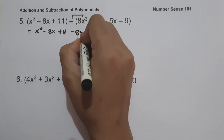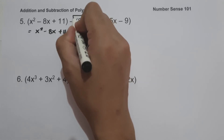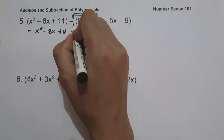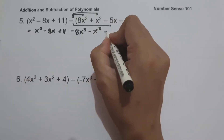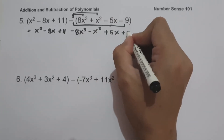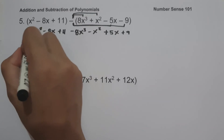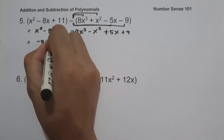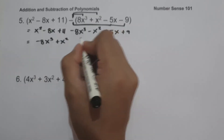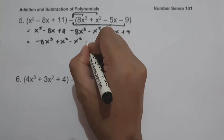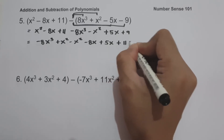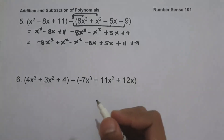Negative multiplied by x squared is negative x squared. Negative multiplied by negative 5x is positive 5x. And negative multiplied by negative 9 is positive 9. So we have negative 8x cubed, then x squared minus x squared, minus 8x plus 5x, plus 11 plus 9. So let us simplify.